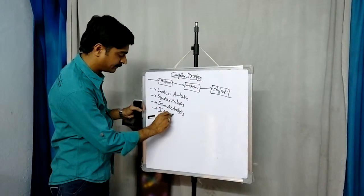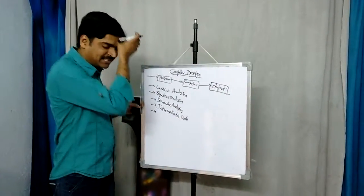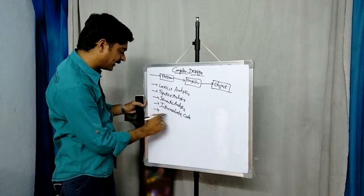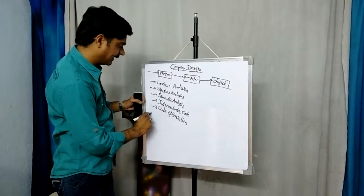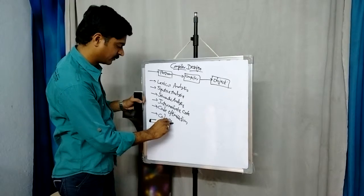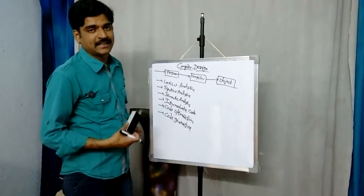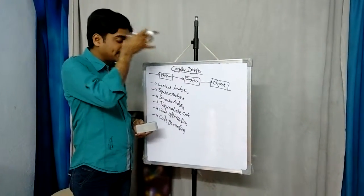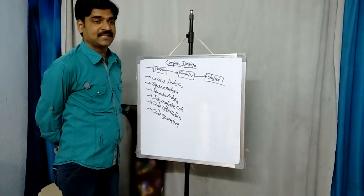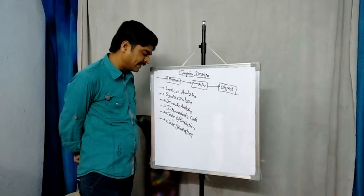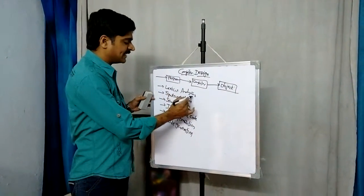The phases of compiler design are: first, lexical analysis; second, syntax analysis; third, semantic analysis; fourth, intermediate code generation; fifth, code optimization; and sixth, code generation. These are the phases performed while constructing the compilation process.